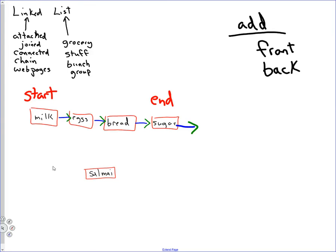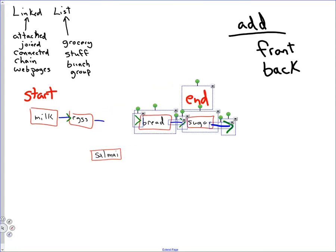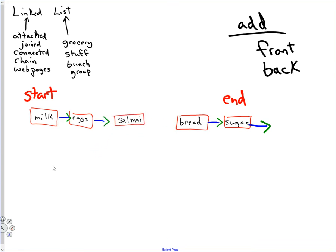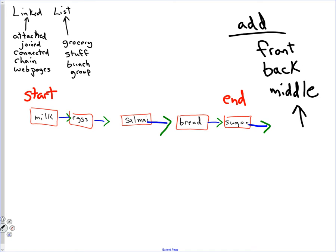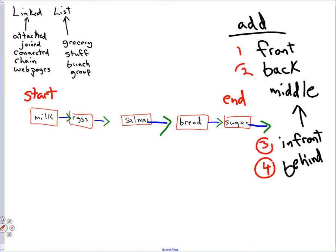Is that the only place I could add salami? Carter, tell me where to put it in the middle — be descriptive. In between eggs and bread. He told me a very specific thing, which made it easy to understand. I can now insert it between eggs and bread. He told me enough information to add it in the middle. When I add it to the middle, I can add it in front of something or behind something. So when I say add, it's more complicated — there could be about four different ways to add something.